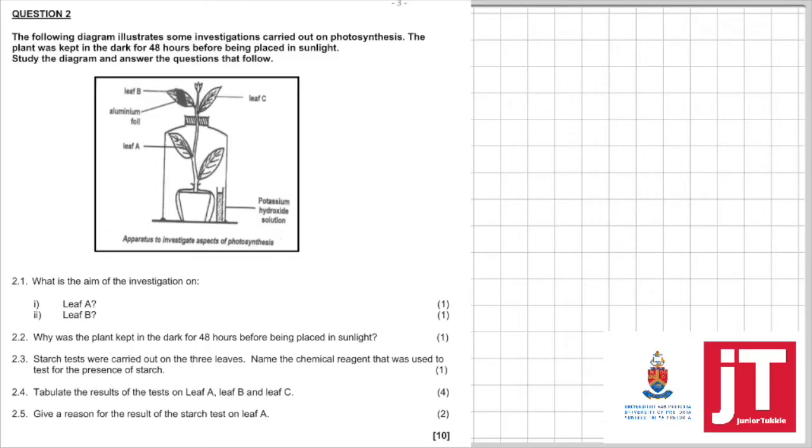2.4. Tabulate the results of the tests on leaf A, B, and C. There you have A. We already know what's going to happen. There's no carbon dioxide, so there'll be no photosynthesis. B, we know what will happen there as well, because some parts are exposed to sunlight and not. And leaf C is obviously exposed to sunlight. So let's look at the memo.